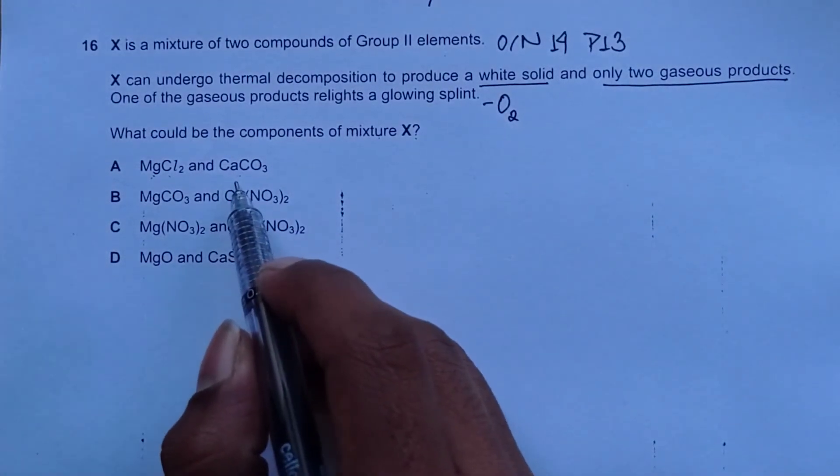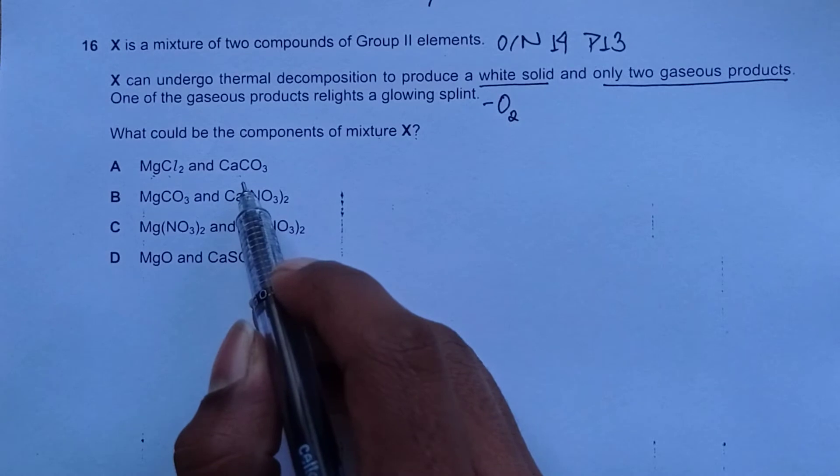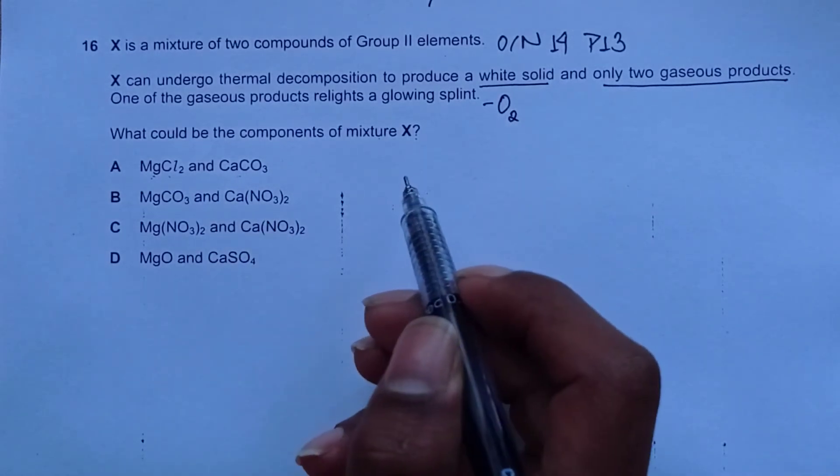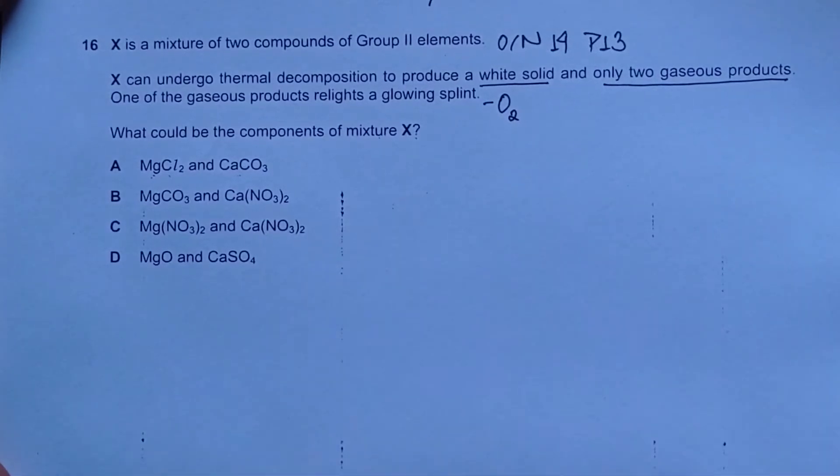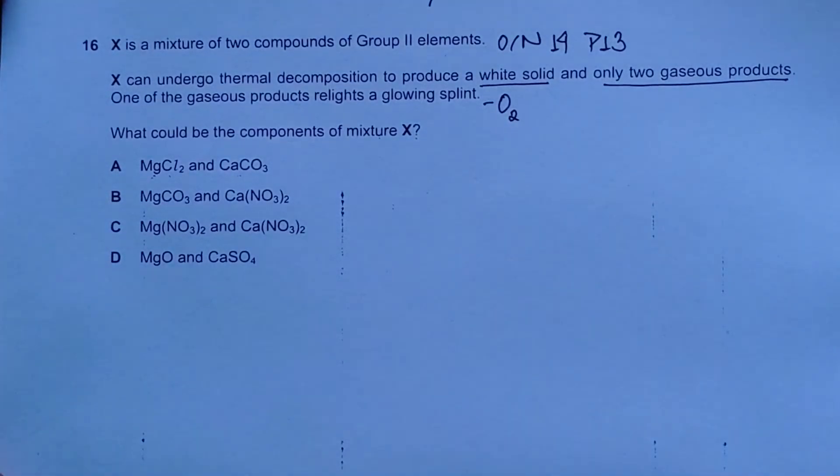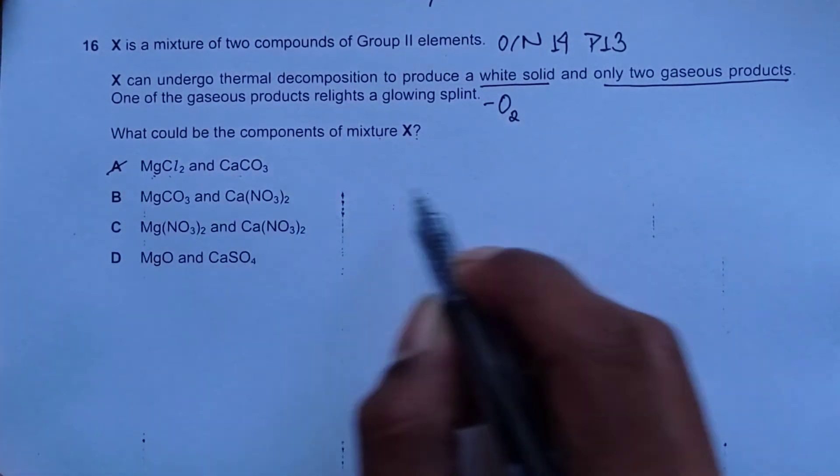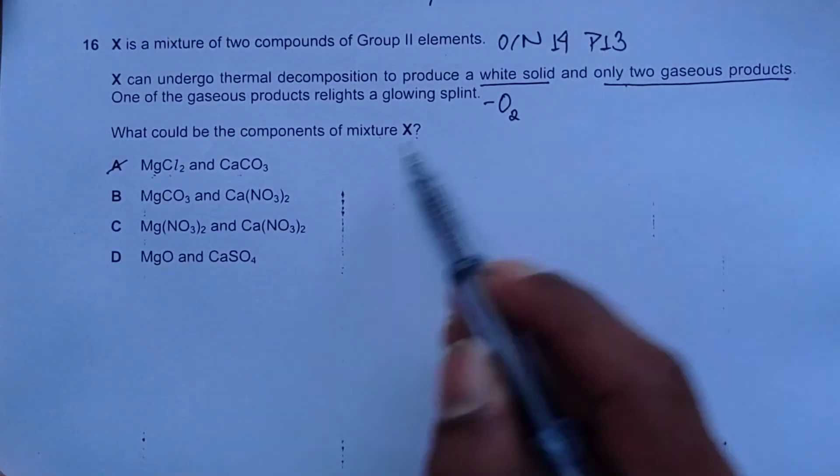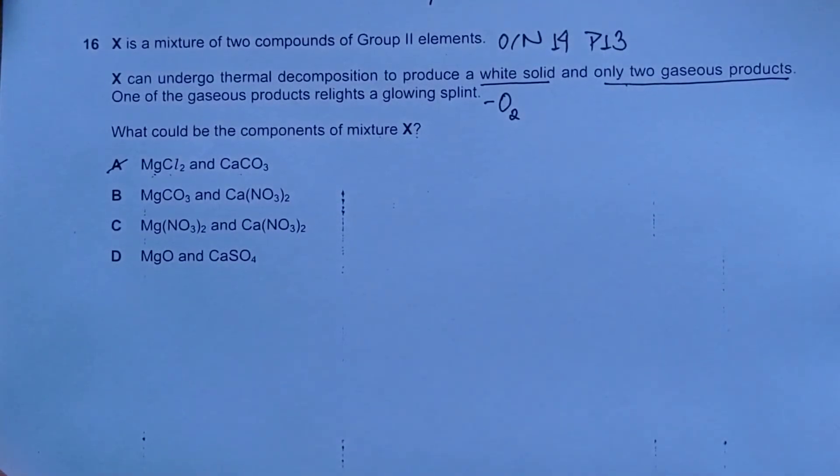When we thermally decompose calcium carbonate, the products we will obtain are calcium oxide and carbon dioxide. Carbon dioxide does not relight a glowing splint. Choice number A is wrong. Two gaseous products are stated, but carbon dioxide is only one single gaseous product.